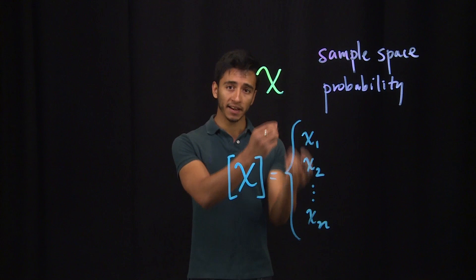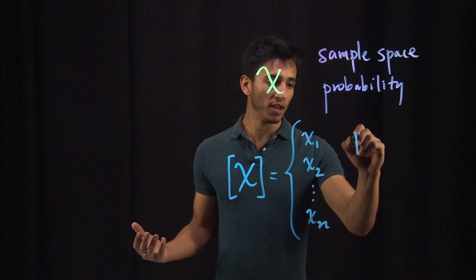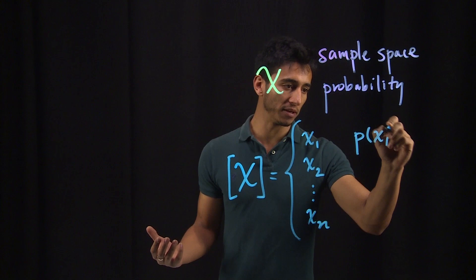And then the probability of each value happening. So the probability of X1, probability of X2, all the way to the probability of Xn.